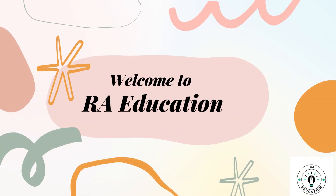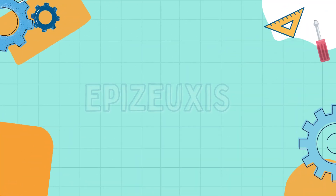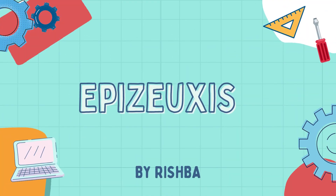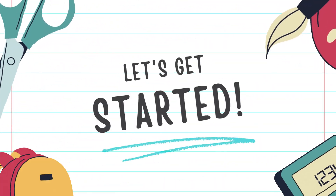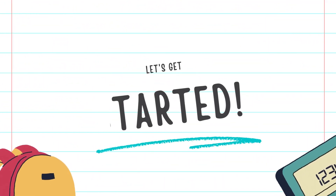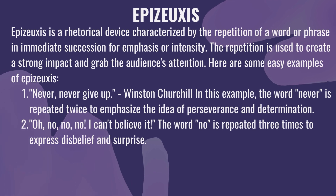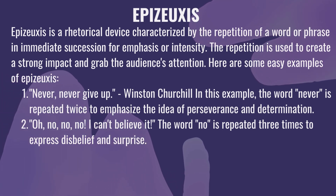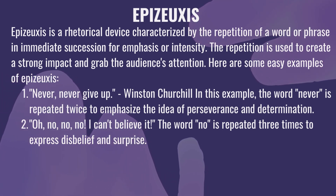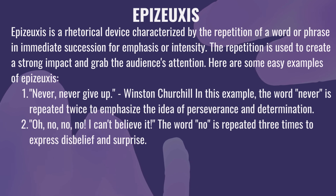We will talk about Epizeuxis, an interesting and easy rhetorical device. Epizeuxis is a rhetorical device characterized by the repetition of a word or phrase in immediate succession for emphasis and intensity. It means that sometimes we repeat some words to get the attention of the readers or the audience, and we repeat the words so that we can gain their attention and emphasize them.